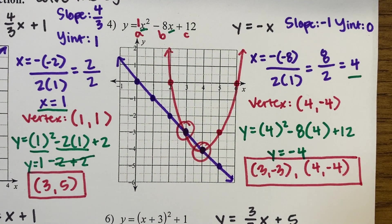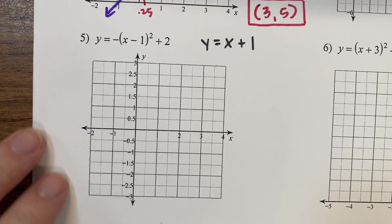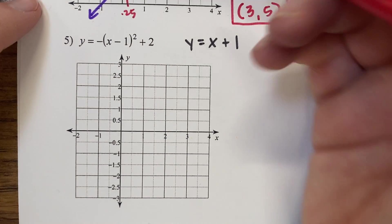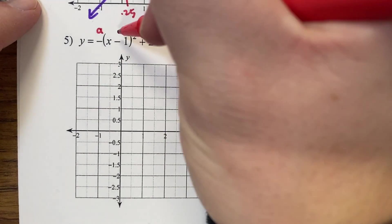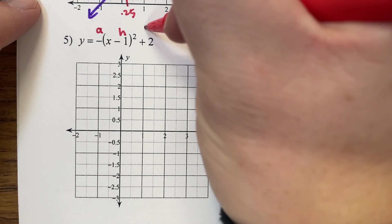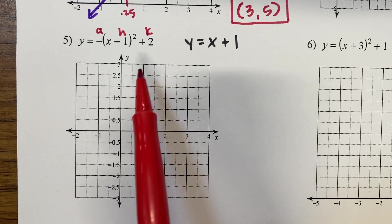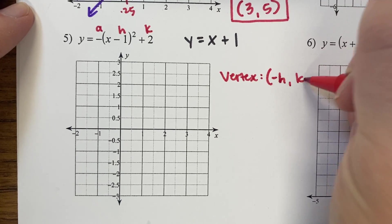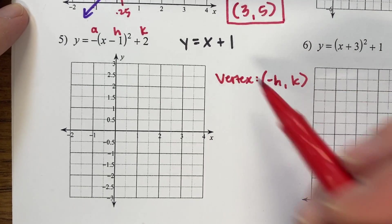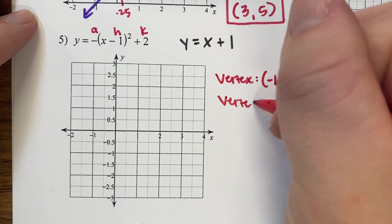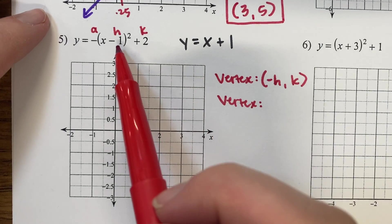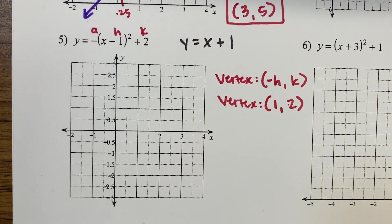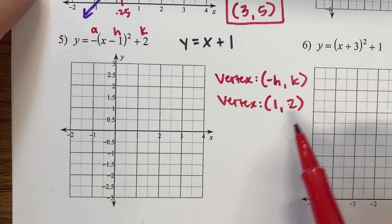Now let's do number 5. We're still graphing a quadratic and a linear, but this time the quadratic is written in vertex form. Vertex form gives us a out in front, h is inside the parentheses, and k is on the end. Vertex form is really nice because it directly tells us our vertex — but remember, the vertex is always negative h, k, meaning we change the sign on h.